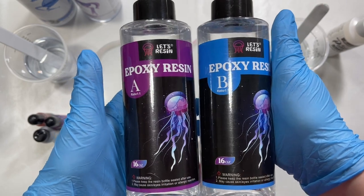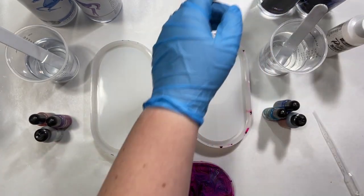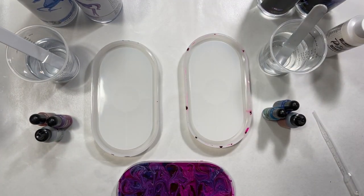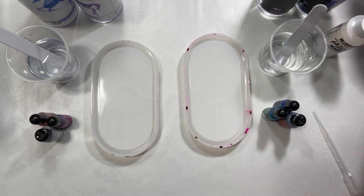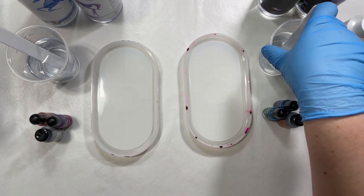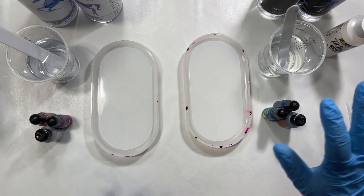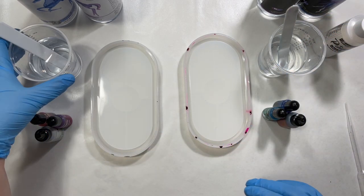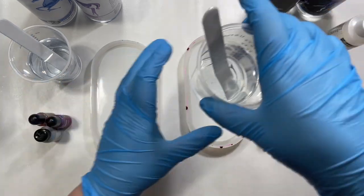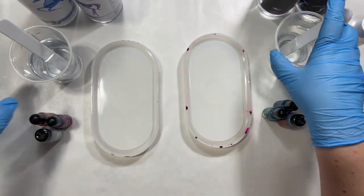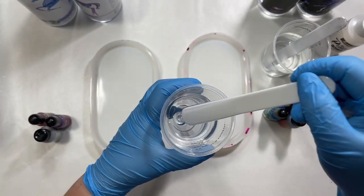I've already mixed them up, I have five ounces of each ready to go. Just my overall thoughts so far: Let's Resin is thinner than the Unicone, but both of them are thinner than Naked Fusion.